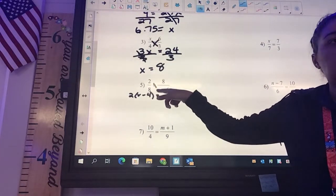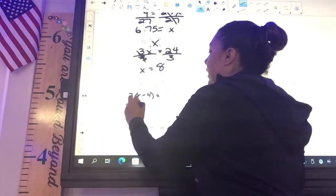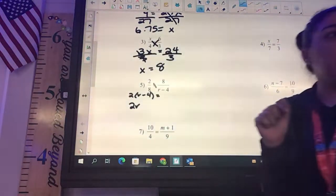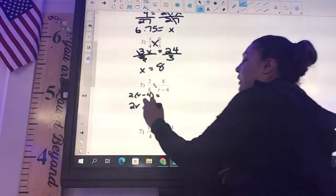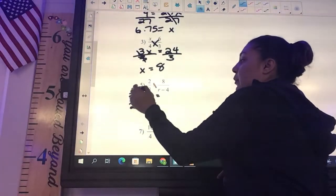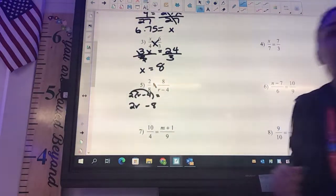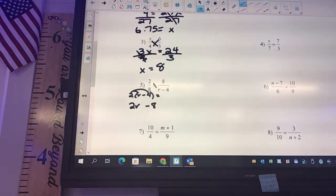Because if you want to look at it, 2 times r is going to be what? 2r. And then you say 2 times negative 4, negative 8, which is what you would get without writing out the parentheses. So either one would be fine.